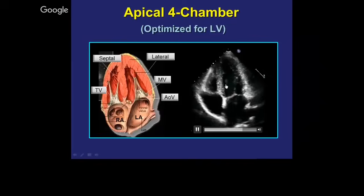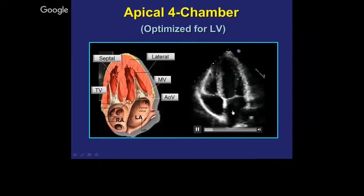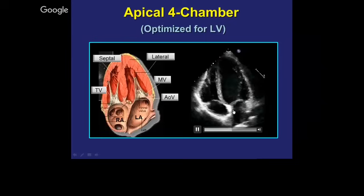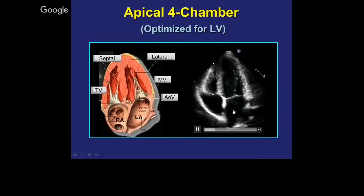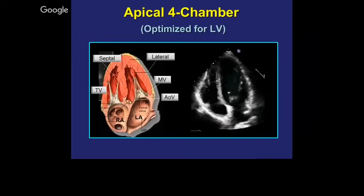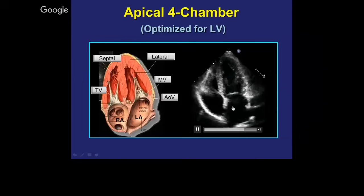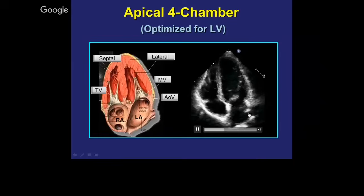When we move the transducer to the apex, we can see the apical view — this is what we call the four-chamber view, because you see all four chambers. You see the left and right ventricle and the right atrium and left atrium. The labels to the left show you what we're looking at: this is the septum, this is the lateral wall, this is the mitral and tricuspid valve, and this is the left atrium.